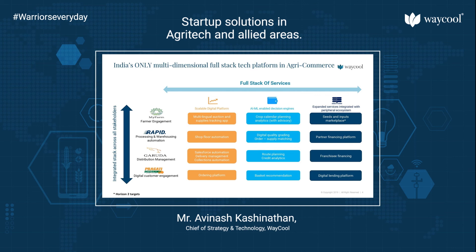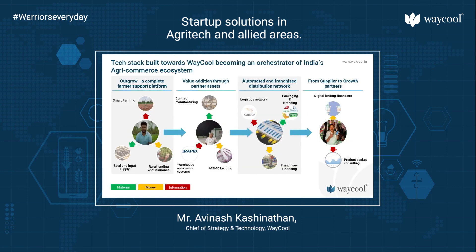On the distribution side, there is automation for the sales force to optimize and help them with the right merchandising support for retailers, plus delivery optimization, route planning, credit analytics, and a digital lending platform for the entire distribution network — ensuring both the distribution network and end retailers can support end consumer needs in a seamless and frictionless manner. This tech stack is an operating system across multiple direct and indirect ecosystem players. The direct ecosystem players are farmers, processors, warehouses, and retailers. The indirect ecosystem includes players in smart farming or precision farming, seeds and inputs, rural lending, and insurance on the farm side.